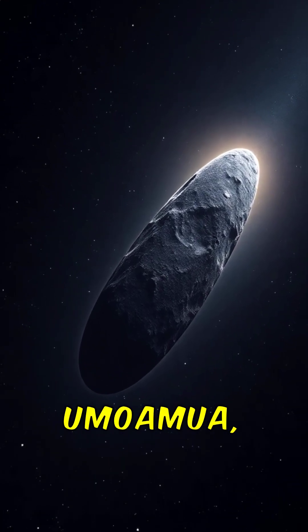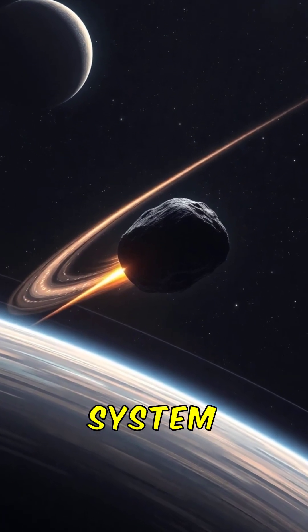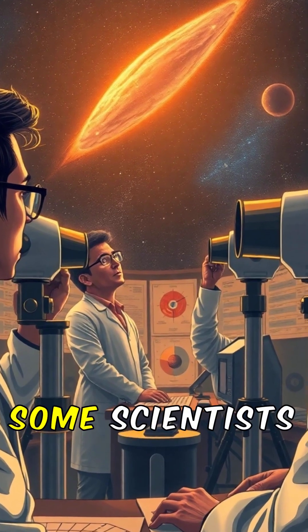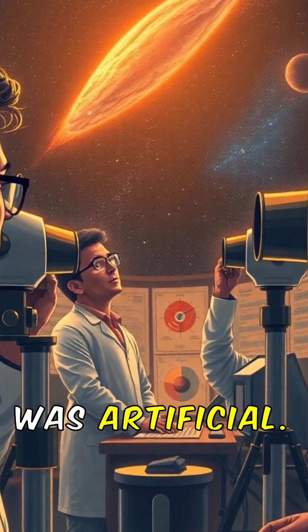A newly found object, Oumuamua, zipped through our solar system from another star system. But it behaved so oddly, some scientists wondered if it was artificial.